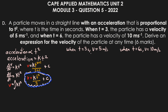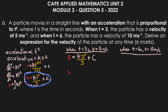We substitute t and v into the formula for both scenarios to get two equations and solve for k and c. For the first condition, v equals 5 and t equals 3: substituting gives 5 equals k times 3³ over 3 plus c. Since 3³ is 27, and 27 divided by 3 is 9, we get the first equation: 5 equals 9k plus c.